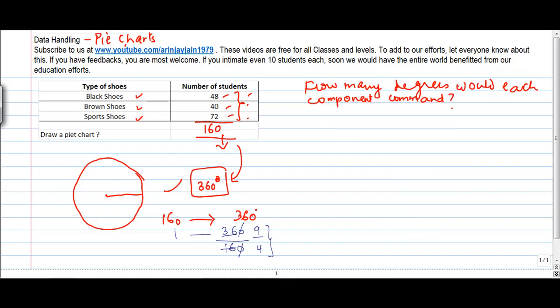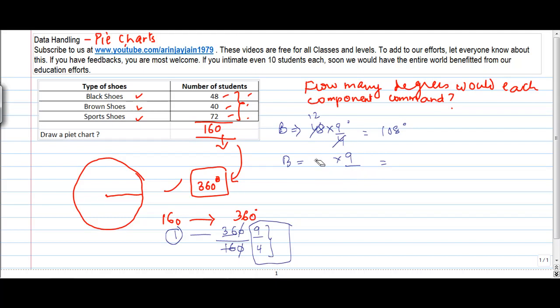Now using this data, can you find out how many degrees would each one of these components comprise? Yes, we can. One unit represents 9 upon 4 degrees. So the first one, the black shoes, will represent 48 into 9 by 4 degrees. 4 goes into 48, 12 times, 12 into 9 gives us 108. Brown is 40 into 9 by 4, which is 90 degrees. And sport shoes is 72 into 9 by 4, which gives us 162 degrees. It can also be the balancing figure.